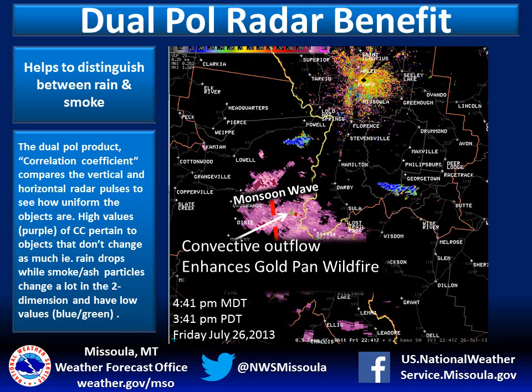There are pixels of green that show up, which are lower CC values. This is the Gold Pan wildfire. This means the radar is seeing objects that are changing a lot, so it could be smoke or ash. If you think about smoke as it moves up into the atmosphere, it moves in erratic ways.